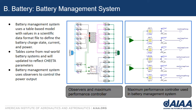The battery management system is shown in more detail here. It uses a table-based model with values from a scientific data format to define battery charge state, current, and power. The tables come from real-world battery systems, so we're using that as a baseline right now and it'll be updated in the future to reflect the Cheetah parameters. The battery management system uses observers of the voltage, temperature, and current to control the power output.